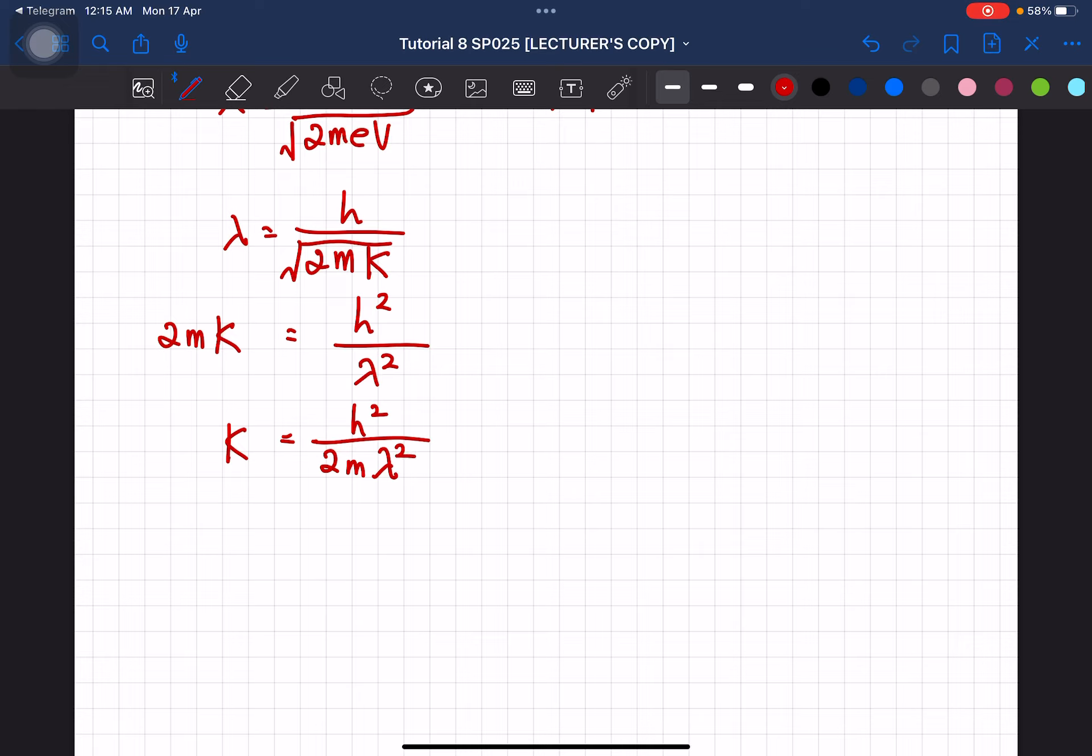So it's going to be K equals h square over 2m lambda square. So sekarang kita sudah ada formula that relates kinetic energy with the wavelength. Okay, so sekarang ni dia cakap electron dengan proton have the same wavelength. So sekarang dia tanya, which one will have the greatest kinetic energy?